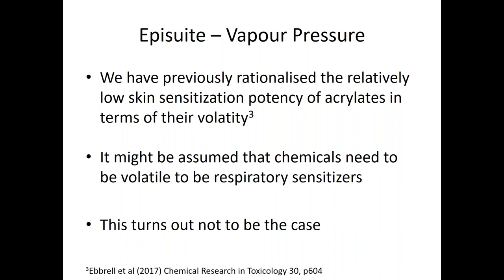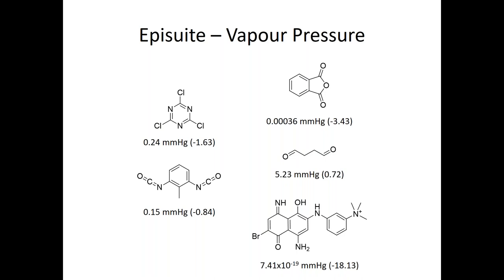We looked at whether volatility gives any discrimination for respiratory sensitization. What we found is that this is not the case. A selection of respiratory sensitizers with vapor pressure values from EpiSuite shows the volatilities vary greatly. Chemicals with positive log vapor pressure values that we previously used in skin sensitization analysis are scattered across the respiratory sensitizer dataset. We don't see any ability to use vapor pressure as a way to distinguish respiratory sensitizers.